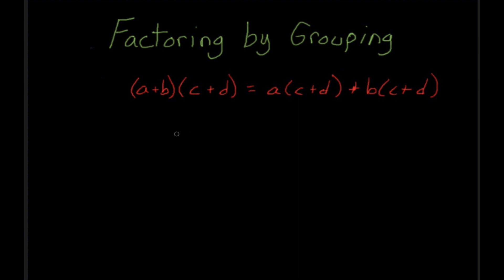We're going to continue our study of factoring by learning about factoring by grouping. The previous method of factoring really only works when you have a polynomial that starts with x squared — a leading coefficient of 1. But what if you have a polynomial that starts with 2x squared, or a leading coefficient greater than 1? To illustrate this method, I'm going to show you that factoring is literally just multiplication in reverse.